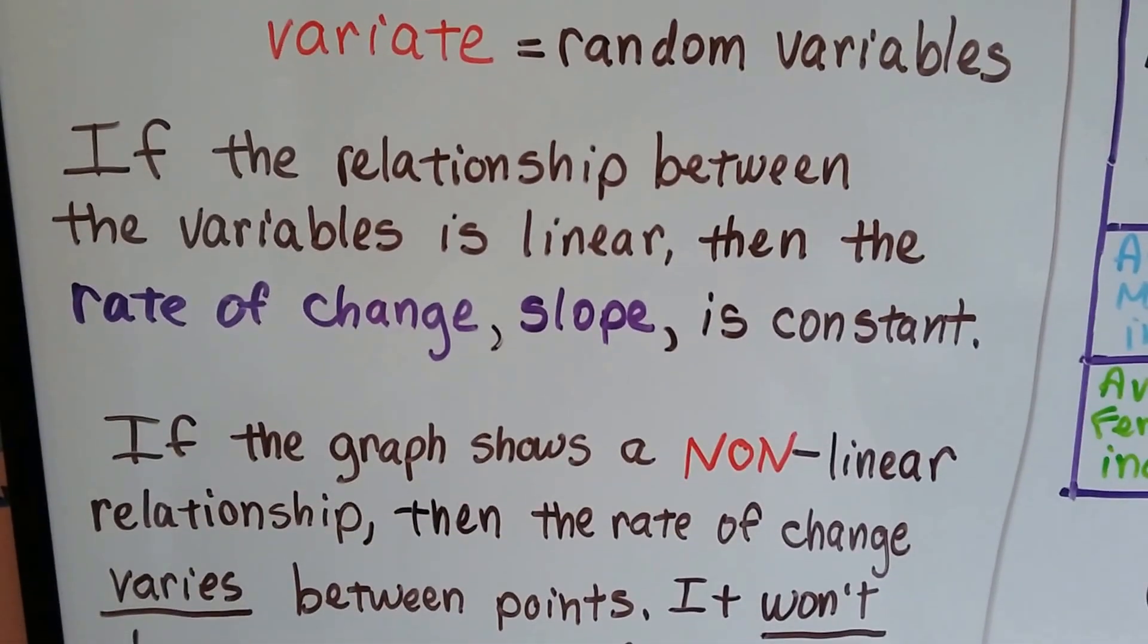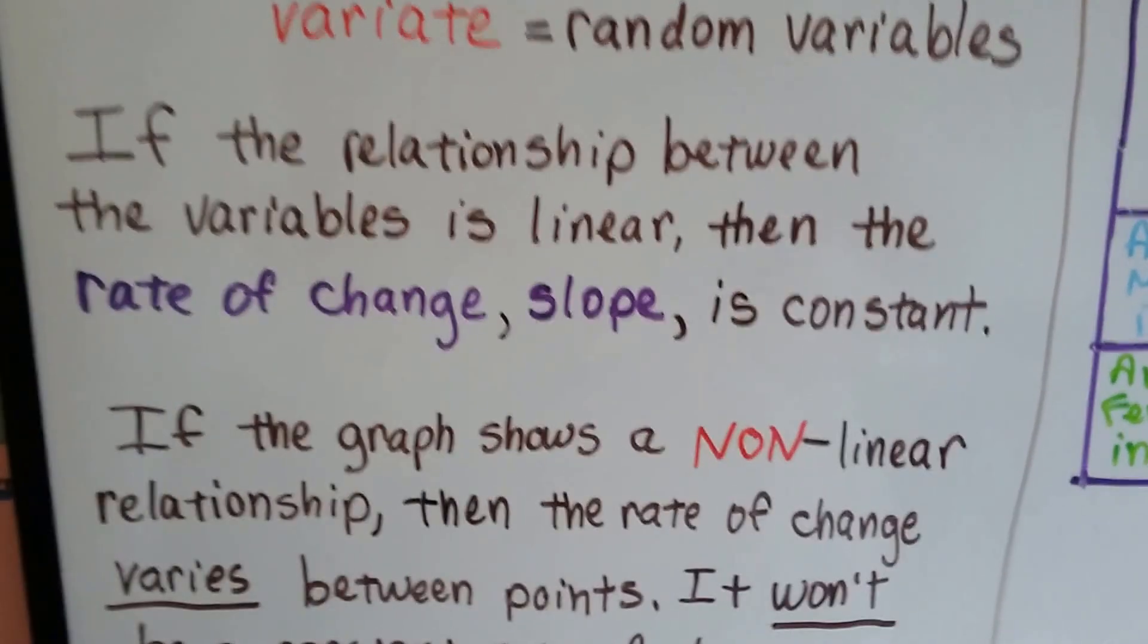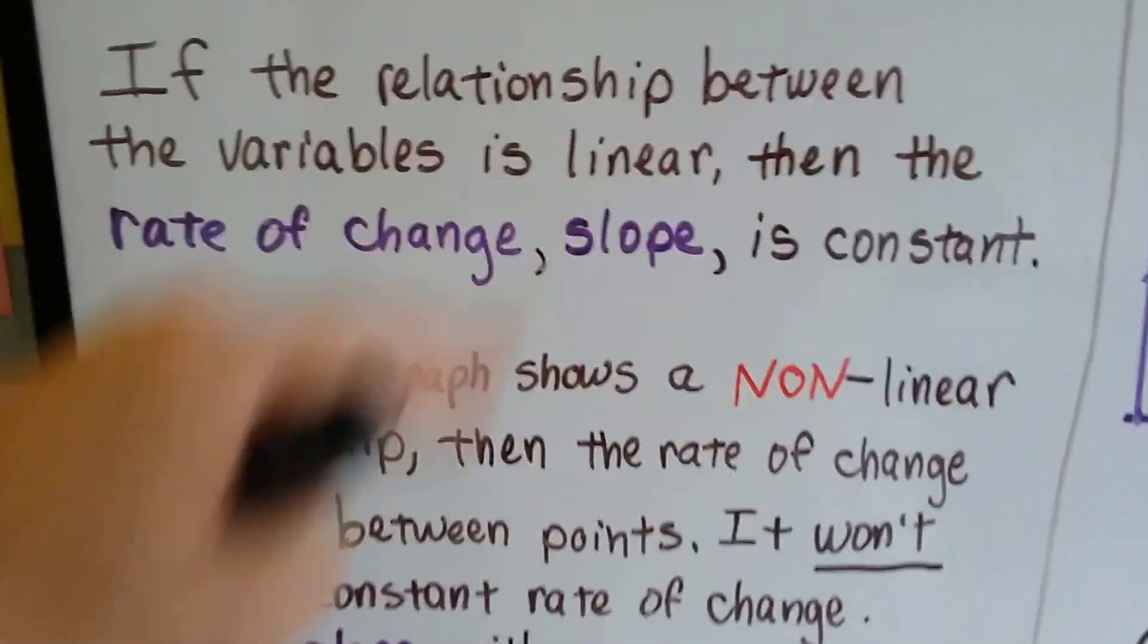If the relationship between the variables is linear, then the rate of change, the slope, is constant. That line will be perfectly straight, going in whichever direction it goes.